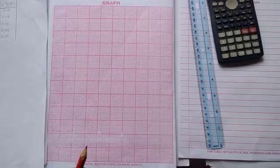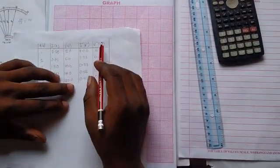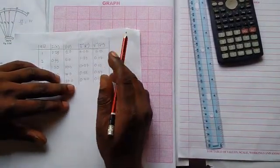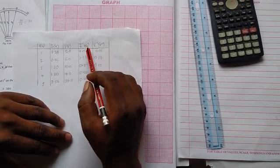Alright, let's go ahead and plot our graph. Now, looking at the graph, we are plotting this on the vertical and this on the horizontal as stated in the question. So we are plotting a graph of this on the vertical and this on the horizontal.